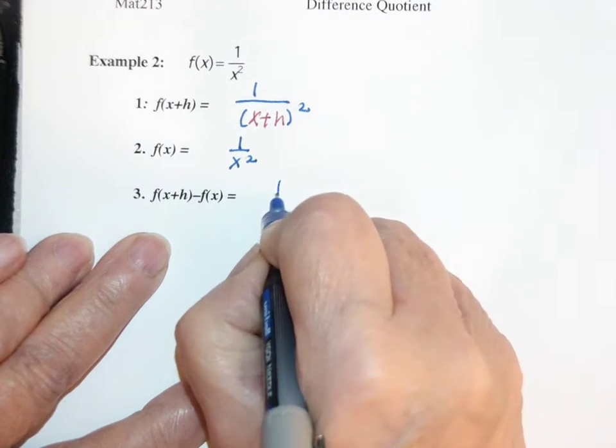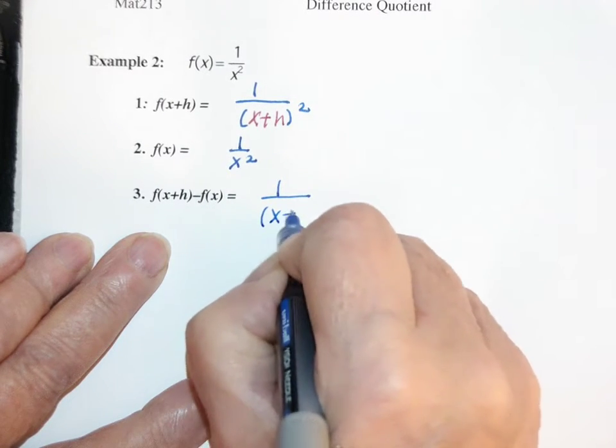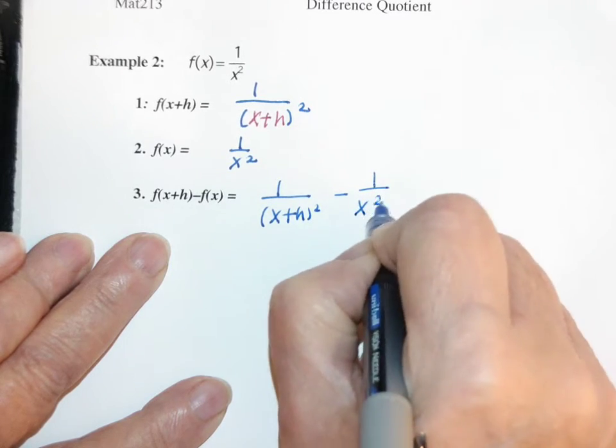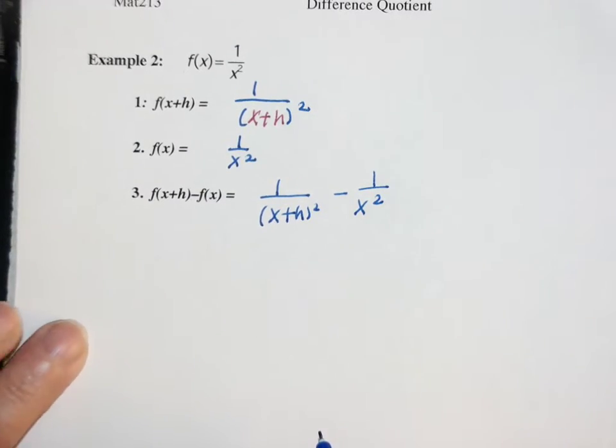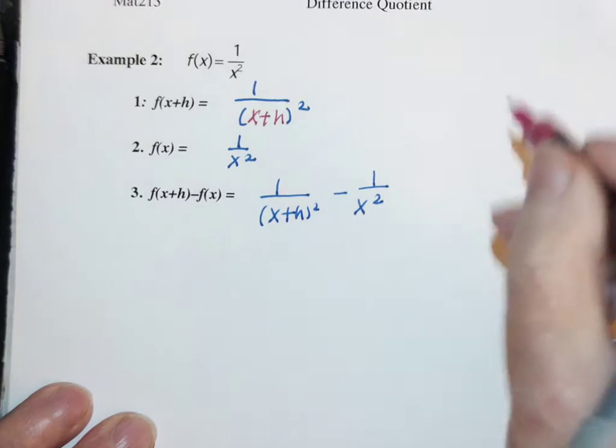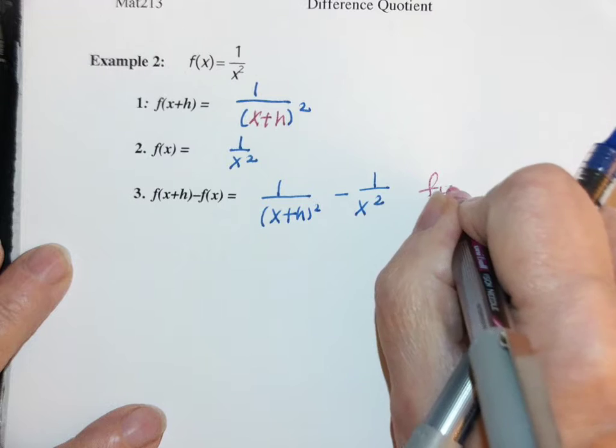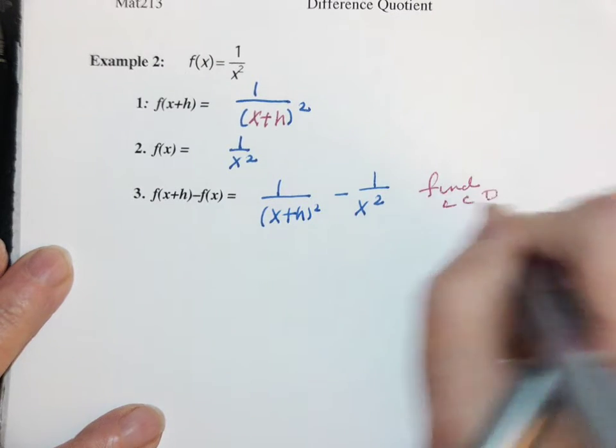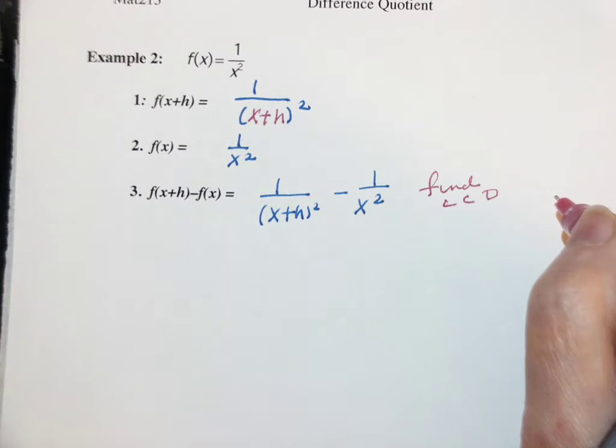Subtract 1 and 2, I get 1 over (x+h)² minus 1 over x². The key to this now is to find a common denominator and simplify.